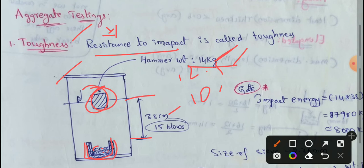If the hammer is released from 38 cm height, it will drop onto this aggregate. The hammer is released from 38 cm height and it will drop for 15 blows.